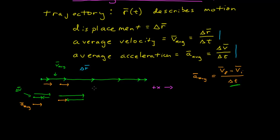Now let's take the next two velocity vectors. These two are about the same length — let's say they are the same length. If I take the second velocity vector and add to it the negative of the first velocity vector, the result is zero; they cancel each other out. So there is, in fact, zero average acceleration in this region, which I represent by a dot.